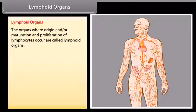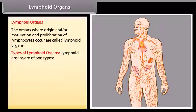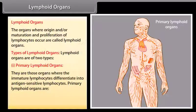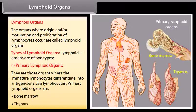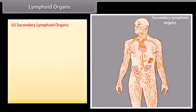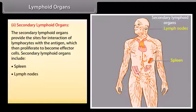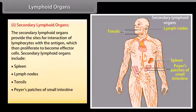The organs where origin, maturation, and proliferation of lymphocytes occur are called lymphoid organs. There are two types: primary lymphoid organs, where immature lymphocytes differentiate into antigen-sensitive lymphocytes — these are bone marrow and thymus; and secondary lymphoid organs, which provide sites for interaction of lymphocytes with antigens to become effector cells — including spleen, lymph nodes, tonsils, Peyer's patches of the small intestine, and appendix.